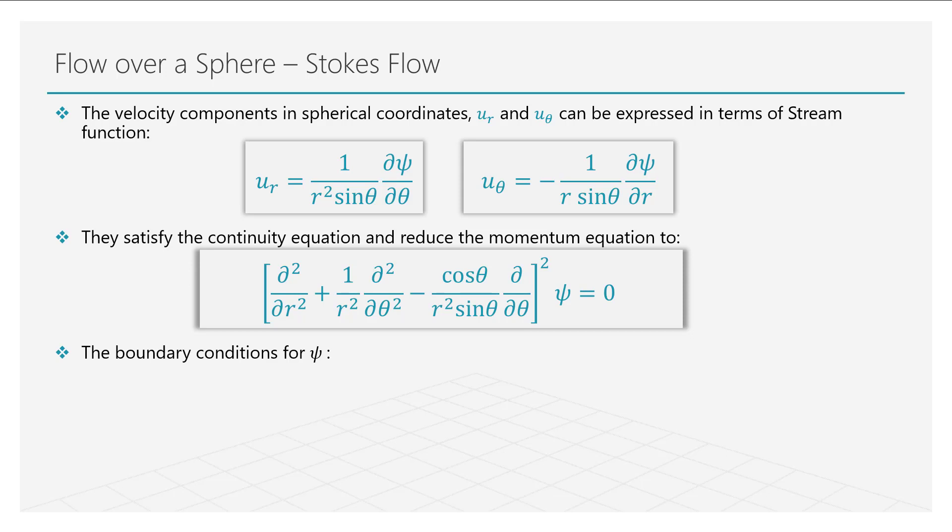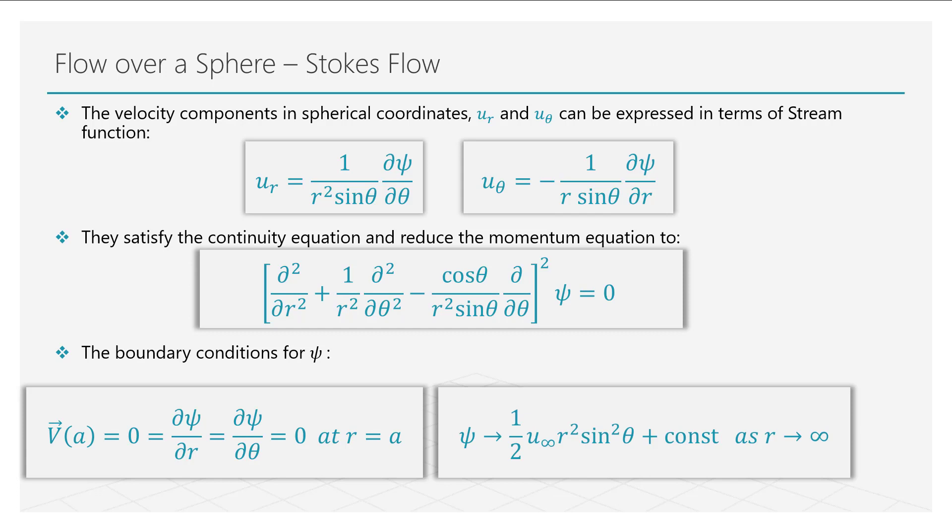To obtain an analytical solution for this equation, we need the knowledge of some boundary conditions. Since we have a solid body, that is the sphere, we can safely assume the surface of the sphere to be a no-slip wall. Therefore, we have the velocity components as zero. For the value of the stream function in the free stream, we can integrate the theta component of velocity to get the shown relationship.